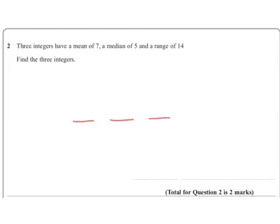well, here are my 3 numbers. Now, mean of 7 means that they've got to add to 21, 3 times 7, because we know to work out the mean we need to add up all the data and divide by how many we've got, so 3 times 7.